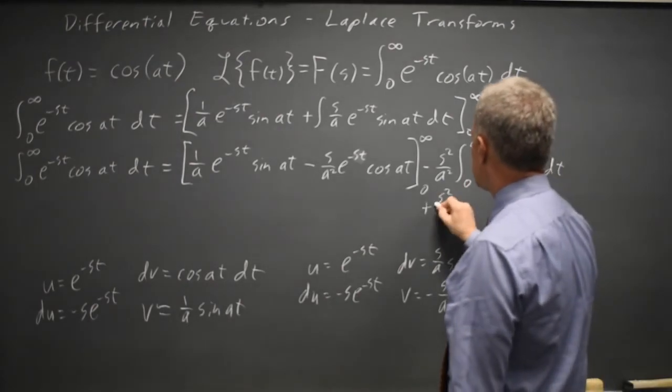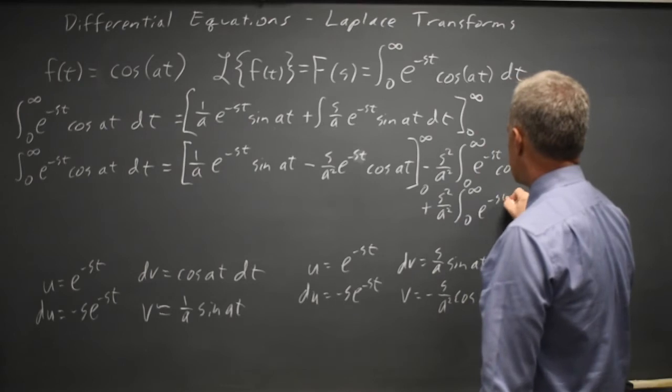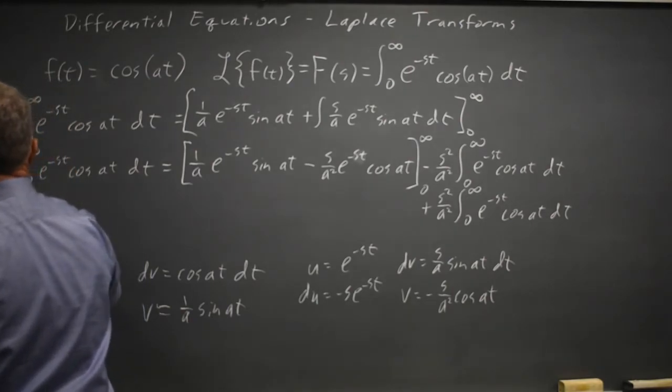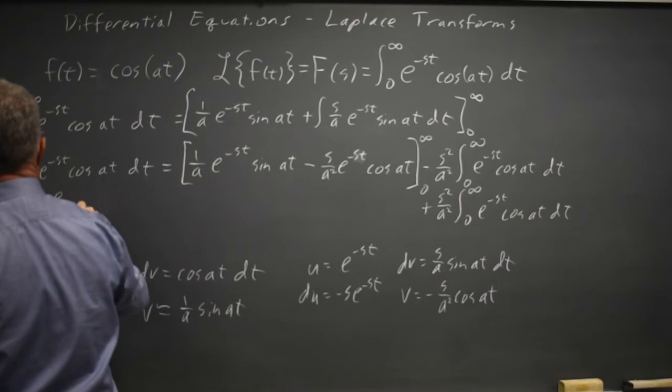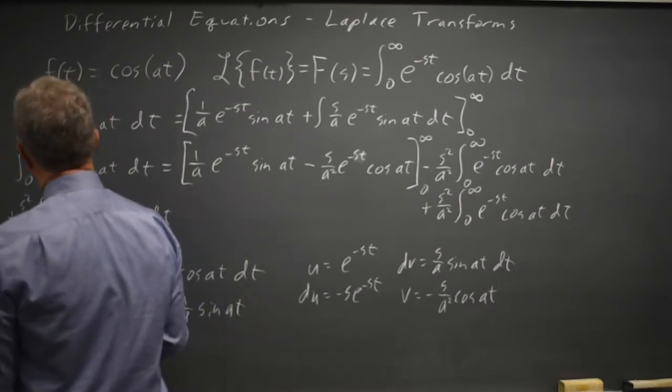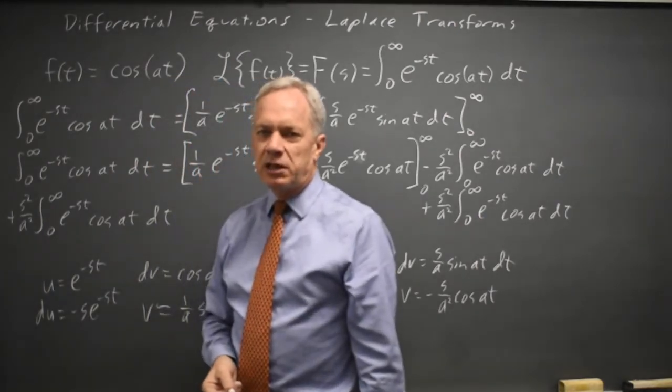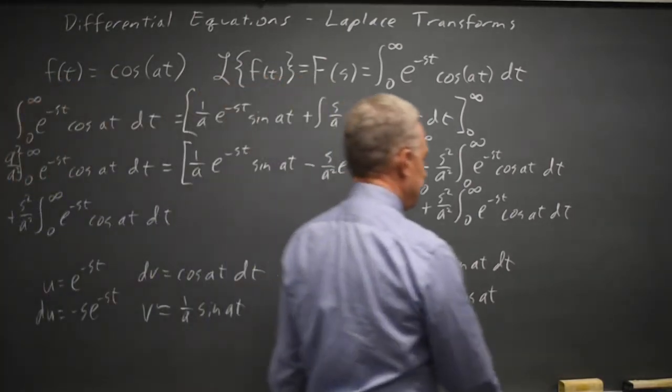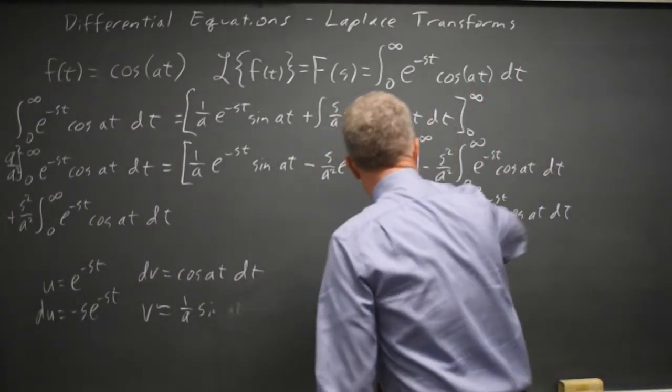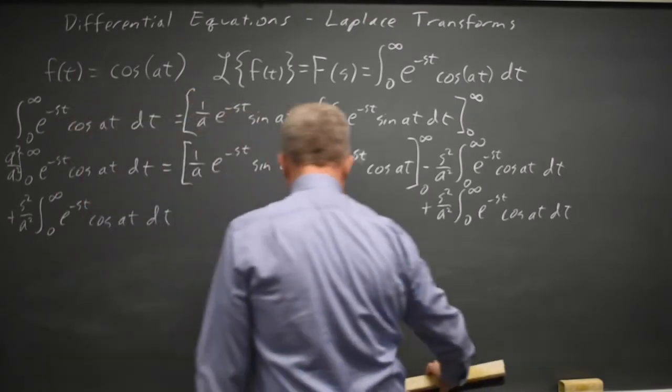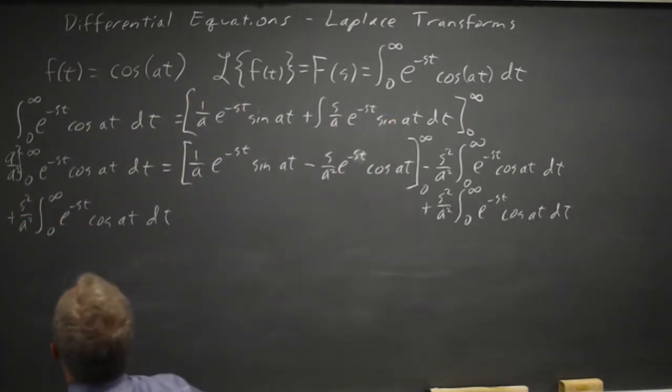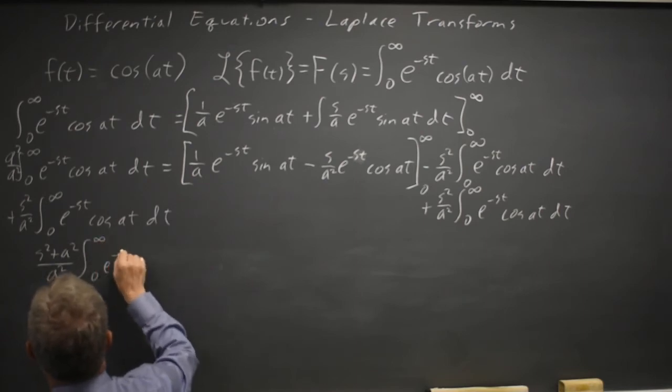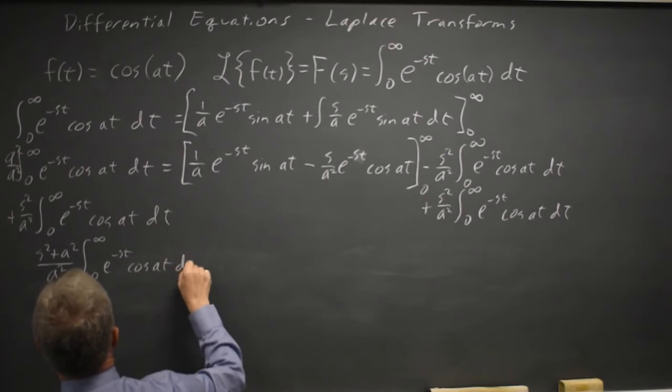So if I add s squared over a squared times my original integral to both sides, I have one times my original integral, and I can write that as a squared over a squared times that integral. So that when I add to both sides, I'll have a common denominator.